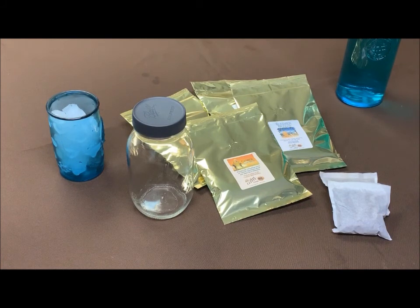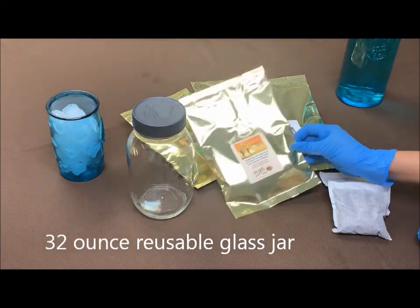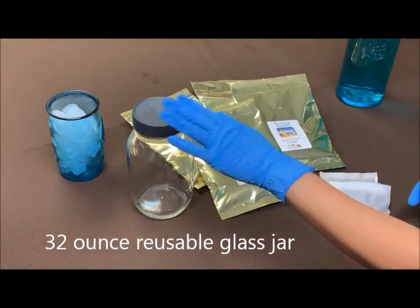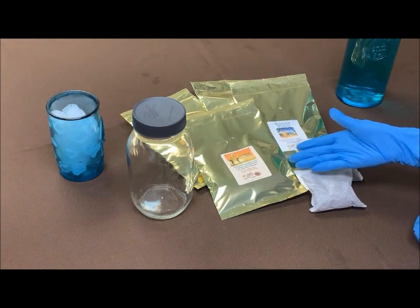In our cold brew kit, we have a 32-ounce mason jar with a special reusable lid that will not rust or age. Each kit comes with four pouches of cold brew, pre-packed with two filters.